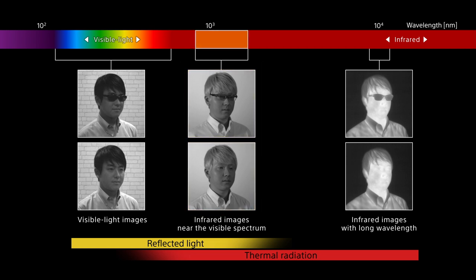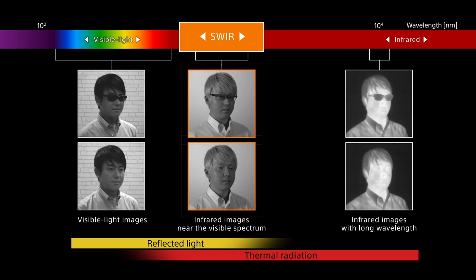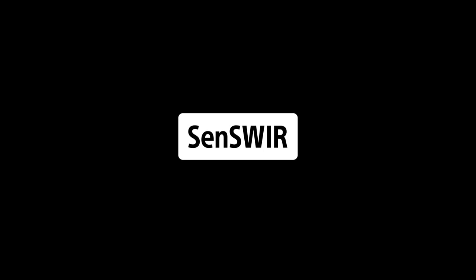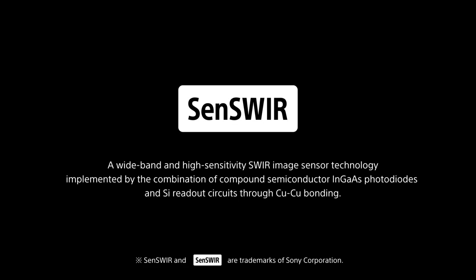Short wavelength infrared is known by the name SWIR. SWIR images of substances such as water or sugar look different from images under visible light, and this feature can be used for many applications. By applying Sony's original technology, SenseWire, Sony's SWIR image sensors are able to capture both visible and short wavelength infrared bands.